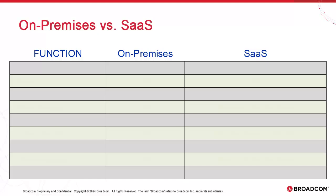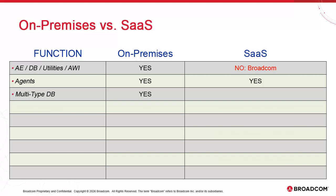Let's look at the individual groups of functions and the level of control on-premises versus SaaS. We start with management of the automation engine, the database, the utilities, and AWI. In the case of on-premises, all of those items are under the control of the administrator. In the case of Atomic SaaS, the entire backend is managed by Broadcom. Regarding agent management, in both configurations customers have complete control of their deployments and administration. On-premises, Atomic Automation supports multiple databases: Oracle, SQL Server, DB2, and PostgreSQL. In Atomic SaaS, the database is PostgreSQL only, but as this is now managed by Broadcom it's completely transparent to the user.